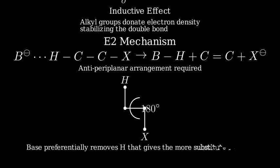When multiple beta-hydrogens are available, the base preferentially removes the one that leads to the most substituted alkene, following the Zaitsev rule.